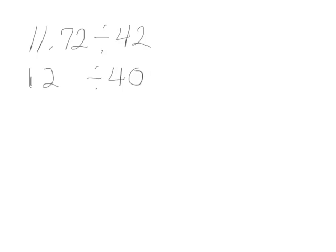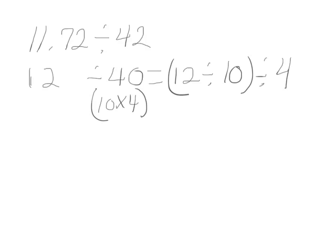I have 12 divided by 40. That is the same as 12 divided by 10, and then divided by 4. We can decompose our 40 as 10 times 4. 12 divided by 10 is 1 and 2 tenths divided by 4 would be 3 tenths, because 12 divided by 4 would be 3.